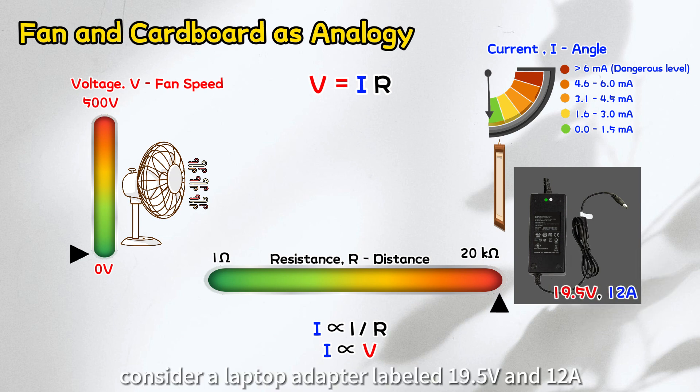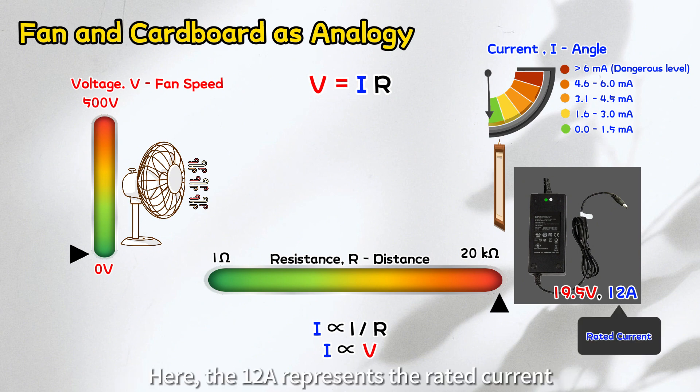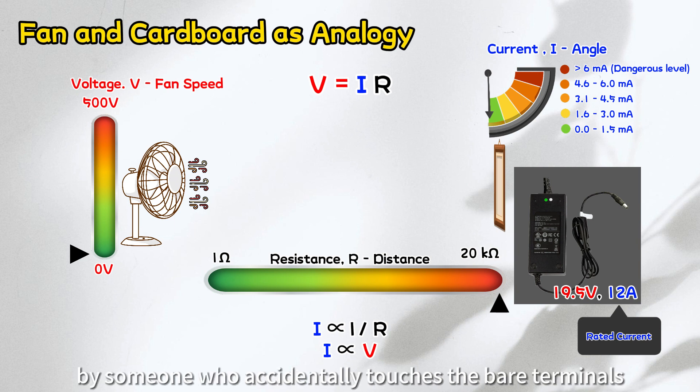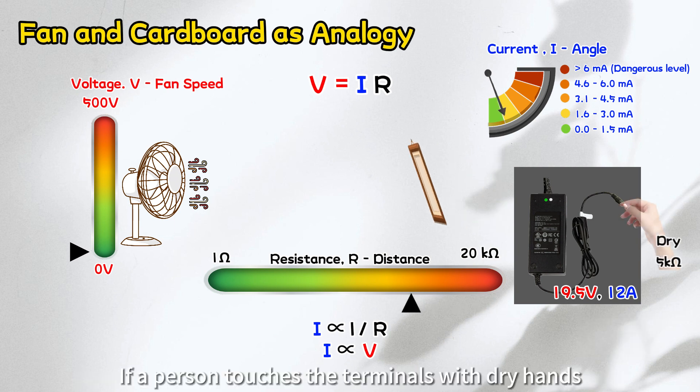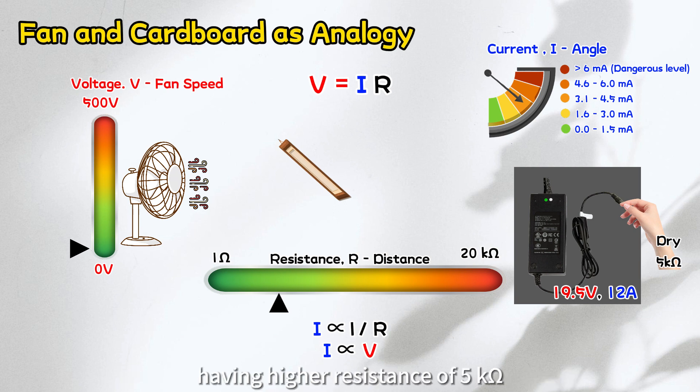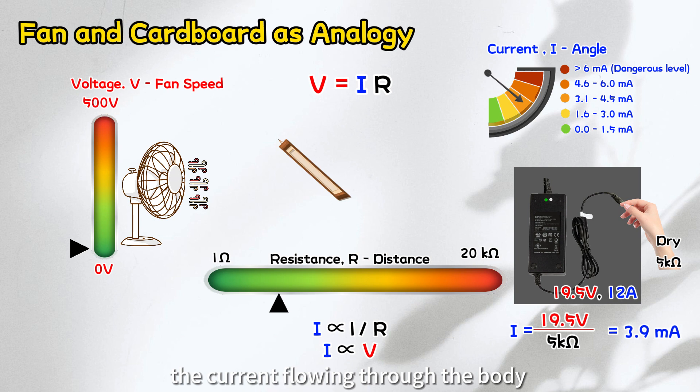For instance, consider a laptop adapter labeled 19.5 volts and 12 amps. Here, the 12 amps represents the rated current but not the actual current experienced by someone who accidentally touches the bare terminals. If a person touches the terminals with dry hands having higher resistance of 5 kiloohms, the current flowing through the body may be around 3.9 milliamps, which doesn't reach the lethal limit according to the guideline mentioned earlier. However, it's important to understand that while the current in this scenario may not be lethal due to the higher body resistance, the person can still feel the shock.